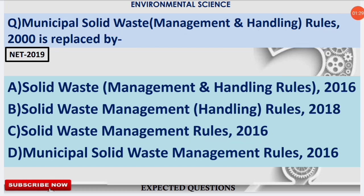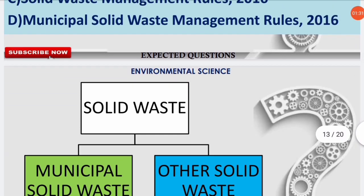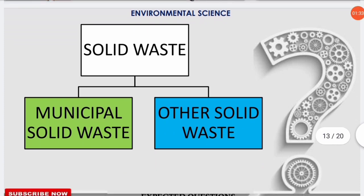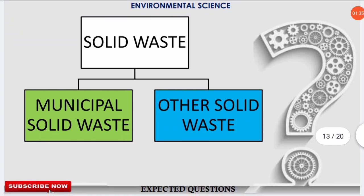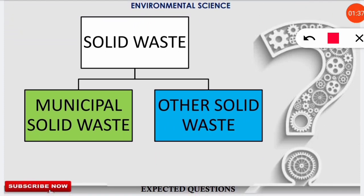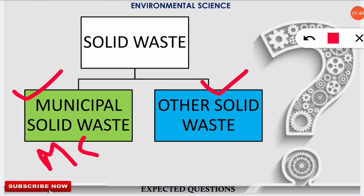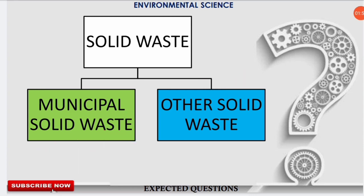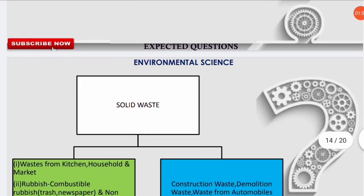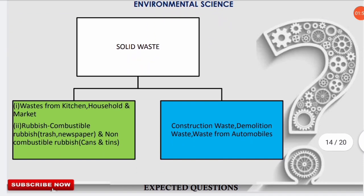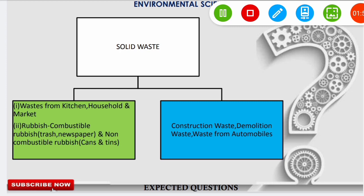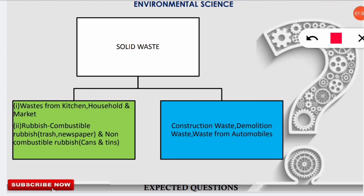Now let's see what are the types of solid waste. Solid waste can be segregated and divided into two broad categories: municipal solid waste and other solid waste. Municipal solid waste is denoted by MSW. In some questions you will get MSW-related questions. Solid waste can also be separated by source: waste generated from kitchen, households, and markets.